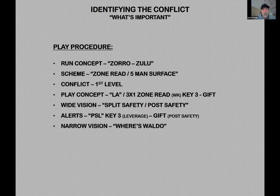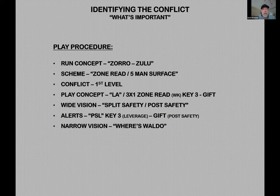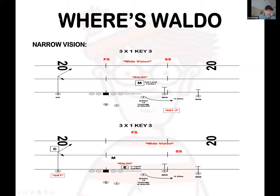Wide vision also gives him pre-snap alerts from leverage or from numbers. Split safety versus post safety gives him a pre-snap alert: do I have leverage on this defense, or have I outnumbered the defense? Or have they outnumbered me in the box? From there, his last step is what we call narrow vision — basically, it's 'Where's Waldo?' We're looking for Waldo. I tell my quarterbacks all the time: the more you see, the less you see. Read the title of the book, then find out who's important to you.